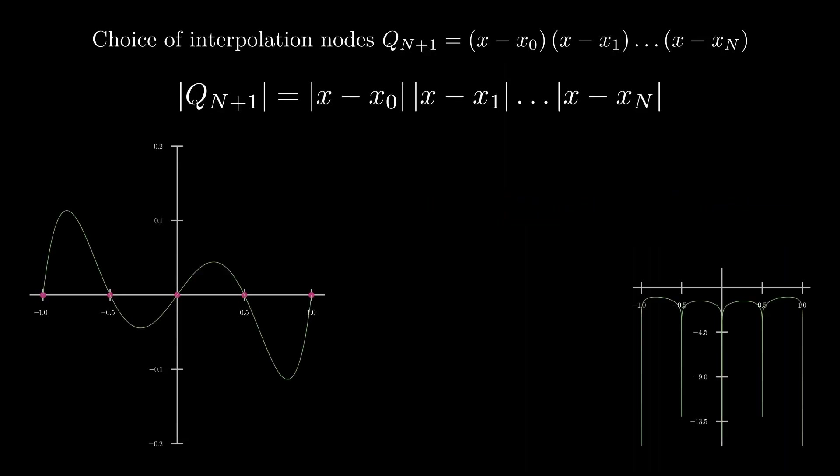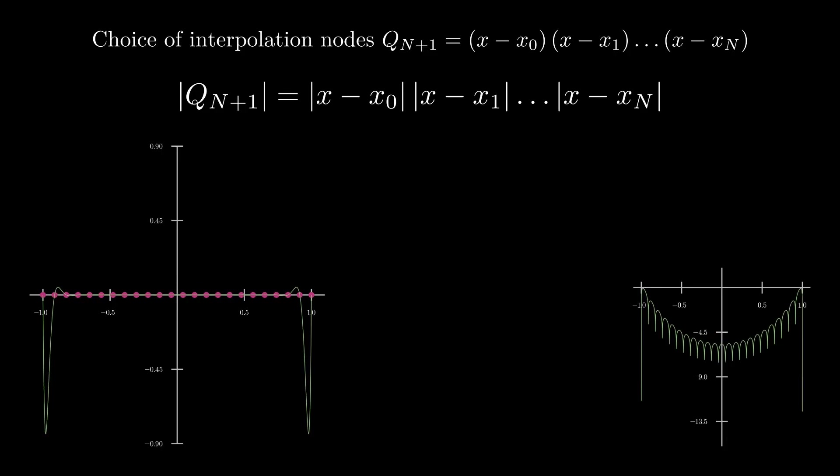On the left, we see the monic polynomial for various node configurations. On the right, we see the log base 10 of the absolute value of the associated monic polynomial. Note not only the size of the extrema, but also the relative size of the extrema near the center versus the edge. This ratio grows rapidly.